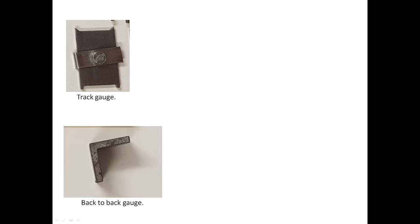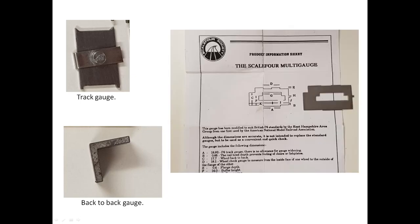This gauge from the Scale 4 Society gives automatic widening on curves. Though not a track gauge, this gauge for checking the back-to-back distance between wheels is essential. Finally, a useful multi-gauge for checking a range of dimensions.